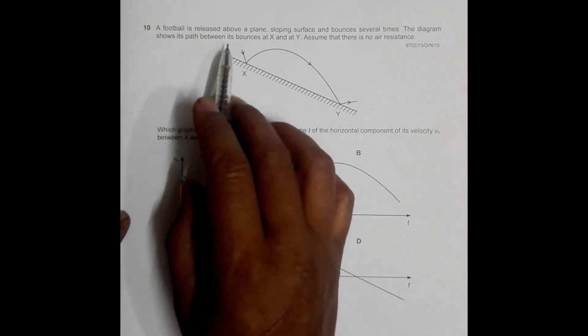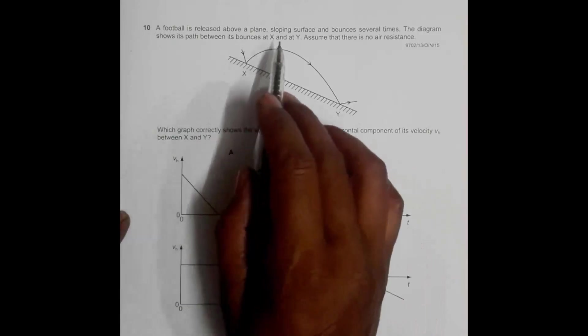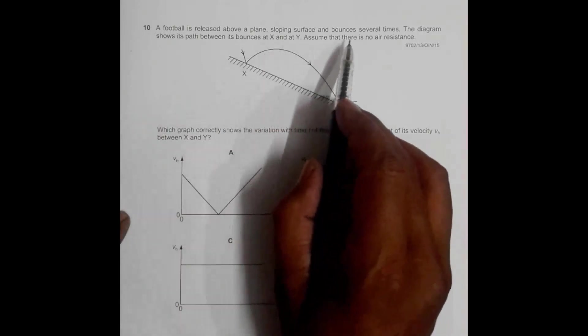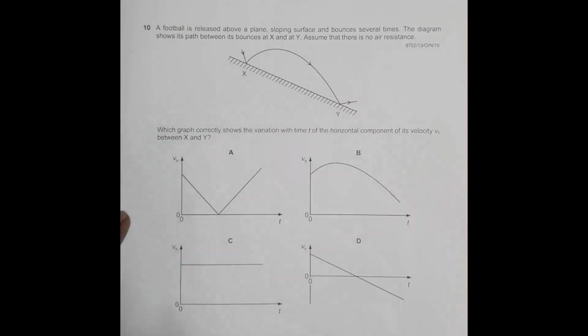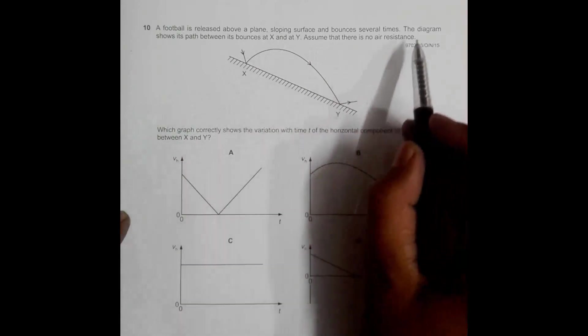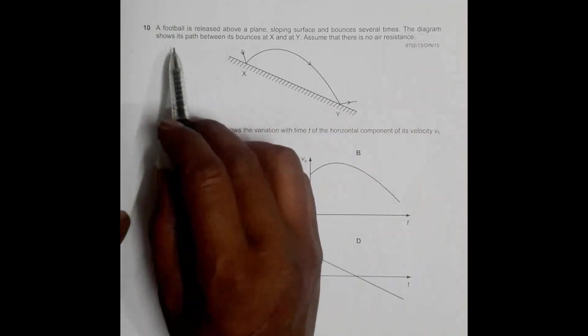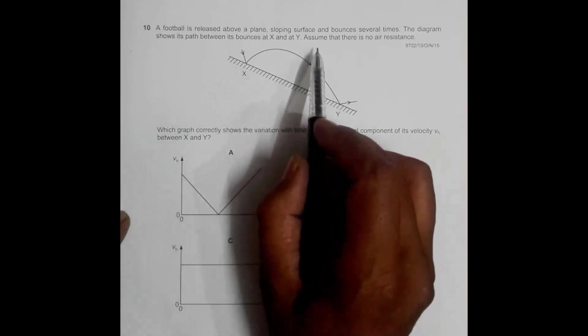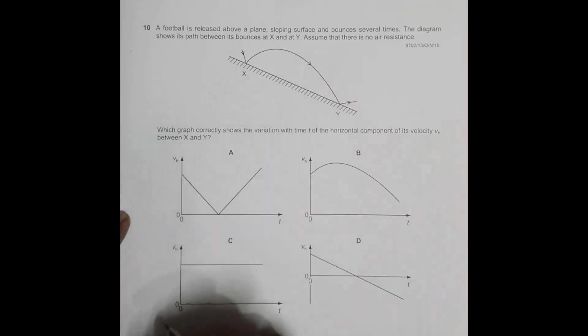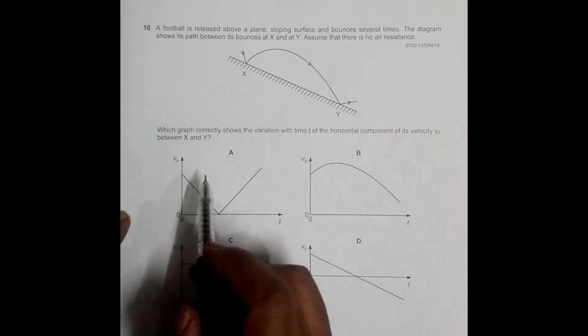A football is released above a plane sloping surface and bounces several times as shown here. We have two bounces here. The diagram shows its path between its bounces at x and y. Assume that there is no air resistance, so it is simply a free fall type of problem.